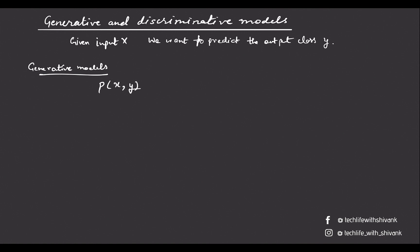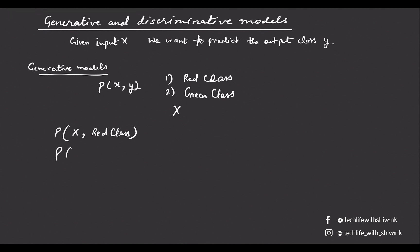To elaborate further, let's say we have only two classes: a red class and a green class. We want to predict whether input x belongs to either red or green. The generative model will find the joint probability P(x, red) and the joint probability P(x, green), check which one is higher, and predict accordingly — green if the green probability is higher, red if the red probability is higher.